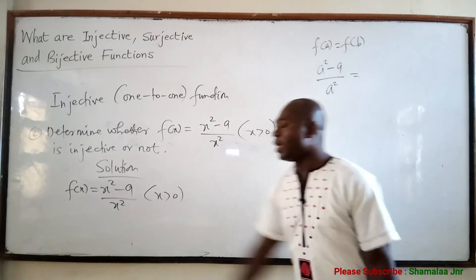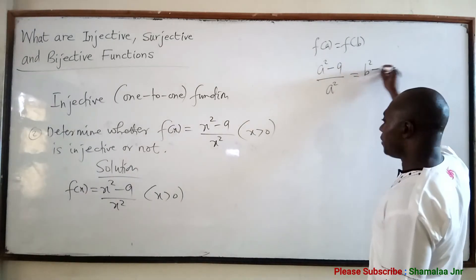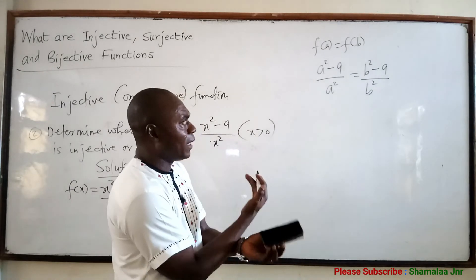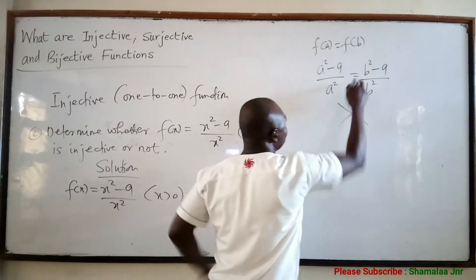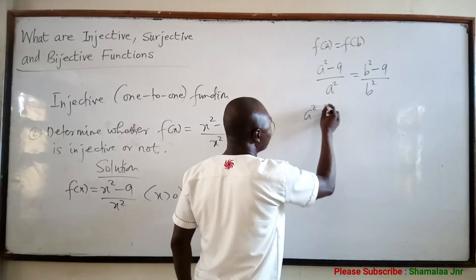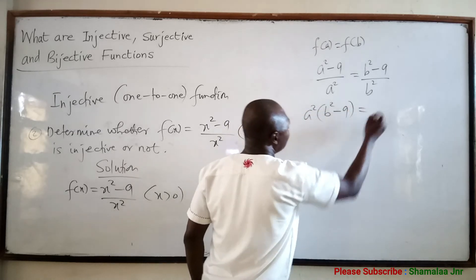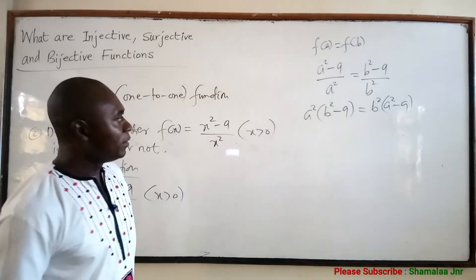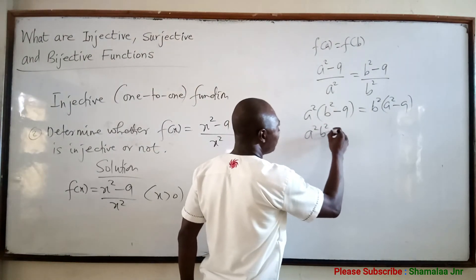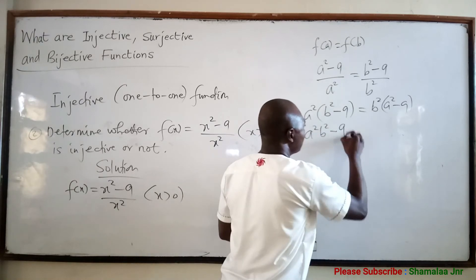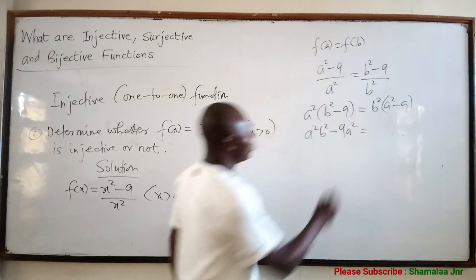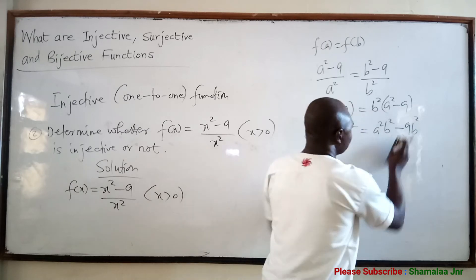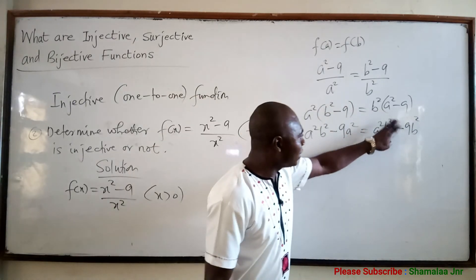And F(B) means wherever you see S, write B, giving (B² − 9)/B². Now if you cross-multiply, you get A² × (B² − 9) = B² × (A² − 9). Expanding, I get A²B² − 9A² = A²B² − 9B². Now A²B² cancels A²B² on both sides.